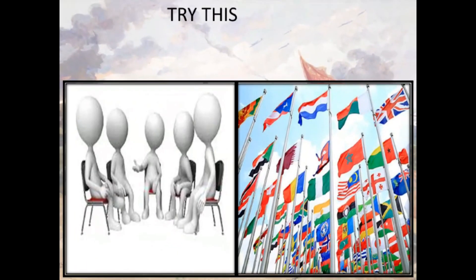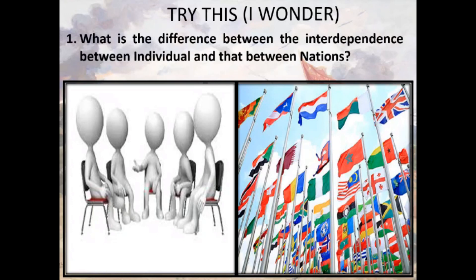Let us discuss the activity 'I Wonder.' Question 1: What is the difference between interdependence between individuals and that between nations? Answer: For multiple reasons, individuals are mutually interdependent on each other and on different institutions in society. Nations, on the other hand, sign treaties with each other and there is continuous exchange of information and bilateral transactions taking place between nations. Thus, the interdependency of individuals is on a social level, while that between nations is on an international level.